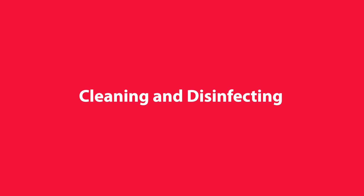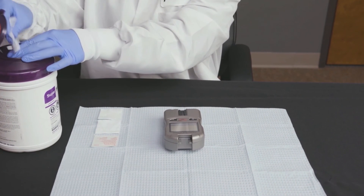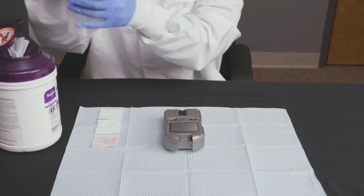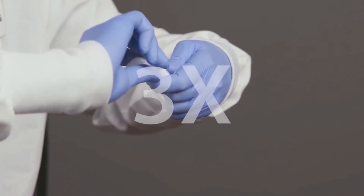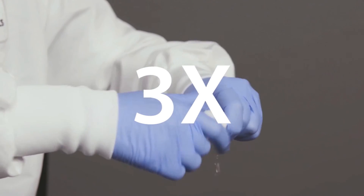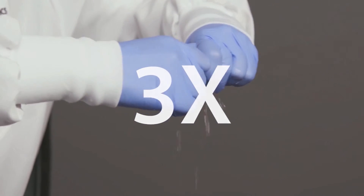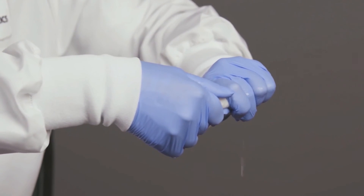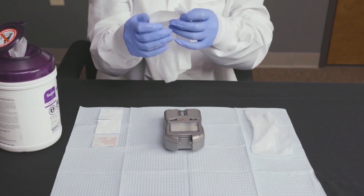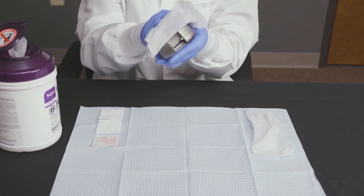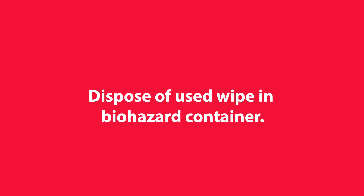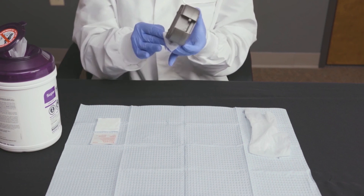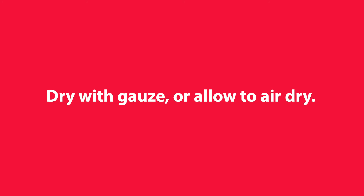First, clean the analyzer. Take two disinfectant wipes out of their container. Fold the wipes in half and forcefully twist them at least three times to wring out excess liquid. Set one wipe aside. With the other wipe, thoroughly clean all areas of the analyzer — this will remove any left-behind organic materials or blood products. Dispose of the used wipe in the biohazard container. Dry the analyzer with a piece of gauze or allow it to air dry.